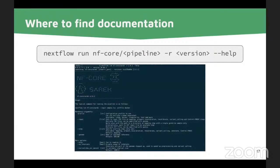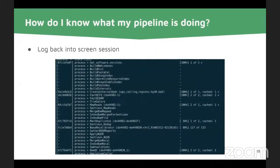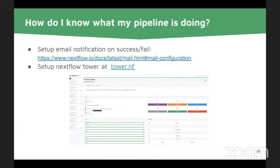You can also type `nextflow run` and then `--help` to get all the parameters printed. Once you've started your pipeline and walked away, how do you know what it's doing? One way is to log back into your screen session and see, for example, that two out of two processes have completed and 117 out of 133 are done. Another option is to set up email notifications on success or failure — whenever your pipeline exits, you get an email telling you what happened, including any error message. Or you can set up Nextflow Tower, which gives you a nice visualization of what's happening to your pipeline and shows all your previous runs.